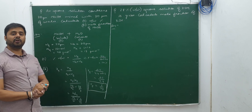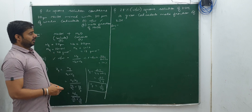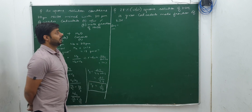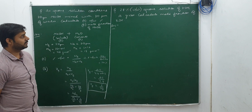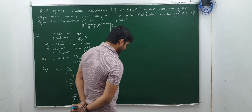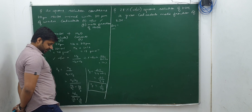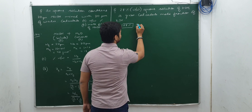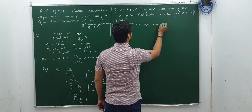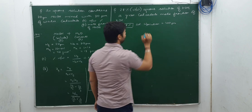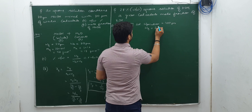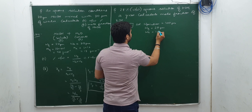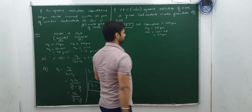Take a pause and try to solve it. Okay — what we can do here is: since percentage is given, consider W of solution = 100 g. Because percent means out of 100, W_B = 28 g, and W_A = 100 − 28 = 72 g.